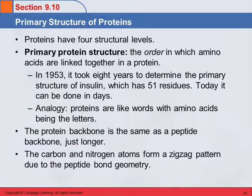There are four different levels of structure for proteins, so we're going to talk about each of those. The primary protein structure is simply the order in which amino acids are linked together in a protein. Just like we gave 'Gly, Ala, Ser, Ser' as an abbreviation for a tetrapeptide — that gives the order of the amino acids. That's what the primary structure is.